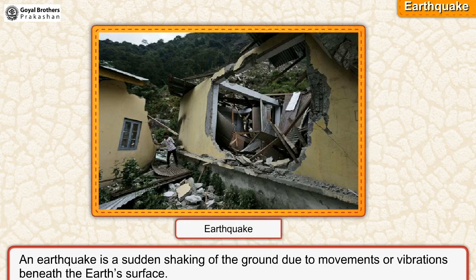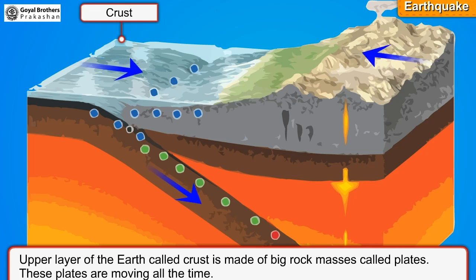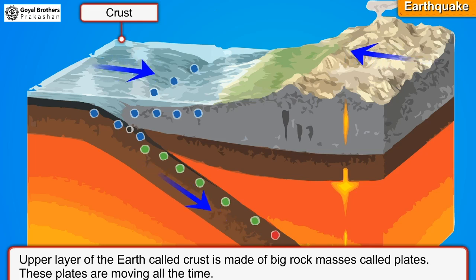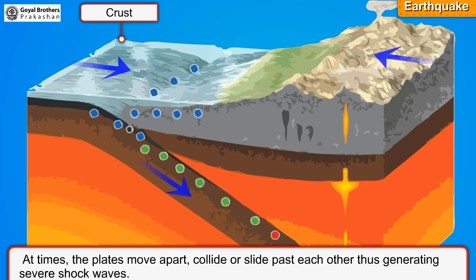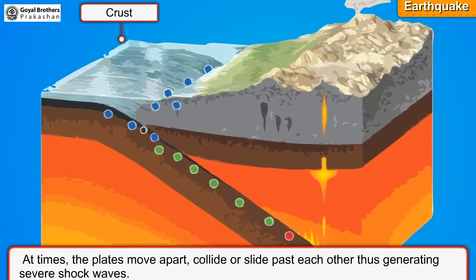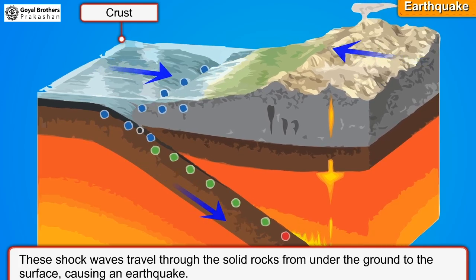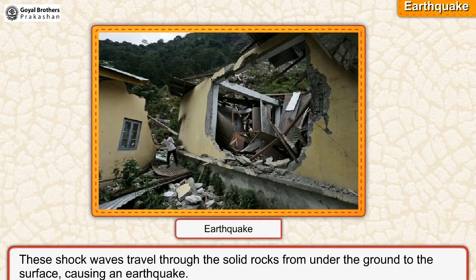An earthquake is a sudden shaking of the ground due to movements or vibrations beneath the earth's surface. The upper layer of the earth, called the crust, is made of big rock masses called plates. These plates are moving all the time. At times, the plates move apart, collide, or slide past each other, thus generating severe shock waves. These shock waves travel through the solid rocks from under the ground to the surface, causing an earthquake.